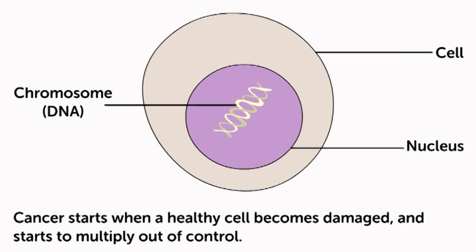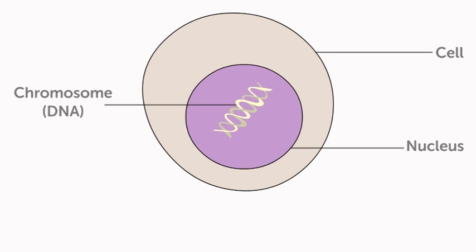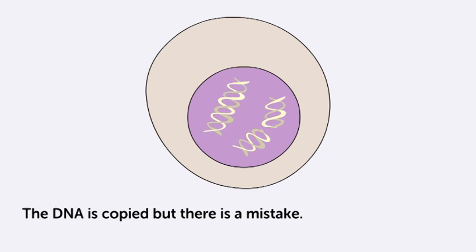Cancer starts when a healthy cell becomes damaged and starts to multiply out of control. The DNA is copied, but there is a mistake.